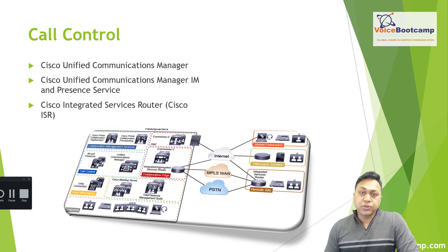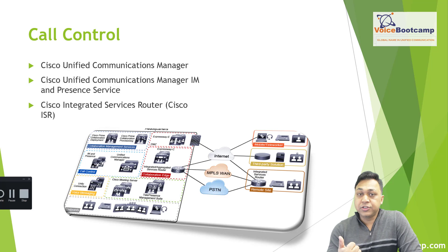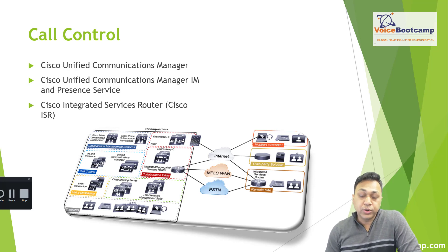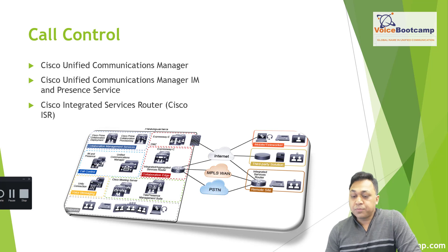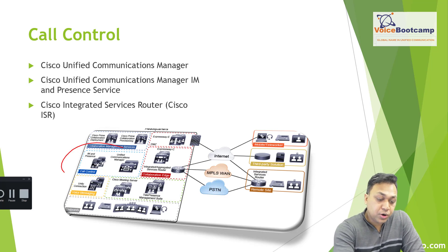We'll go into more details about each component throughout the course, but this will give you a high-level summary. First, call control is provided by two products: Cisco Unified Communication Manager, for endpoints such as IP phones to register, and the Jabber client for Jabber to register with Instant Messaging and IM and Presence. Call control provides registration, call processing, resource management, instant messaging, presence for users and endpoints, and also encompasses remote site survivability for branch offices.